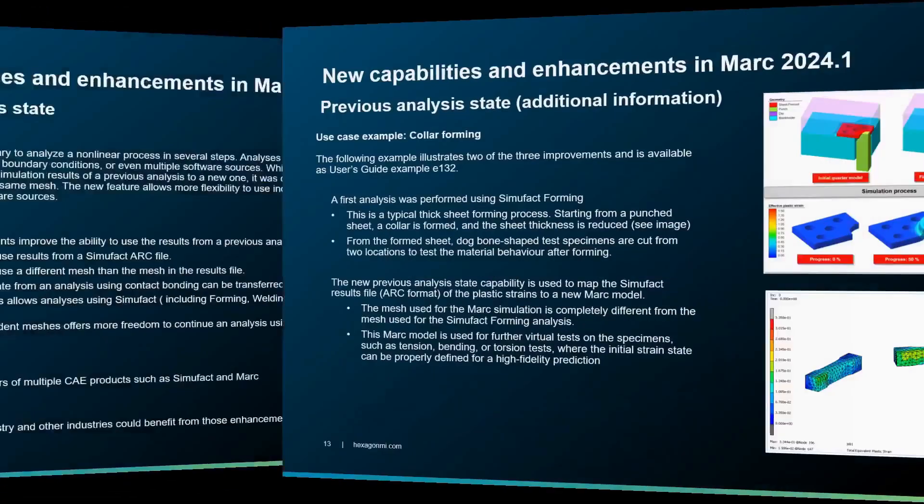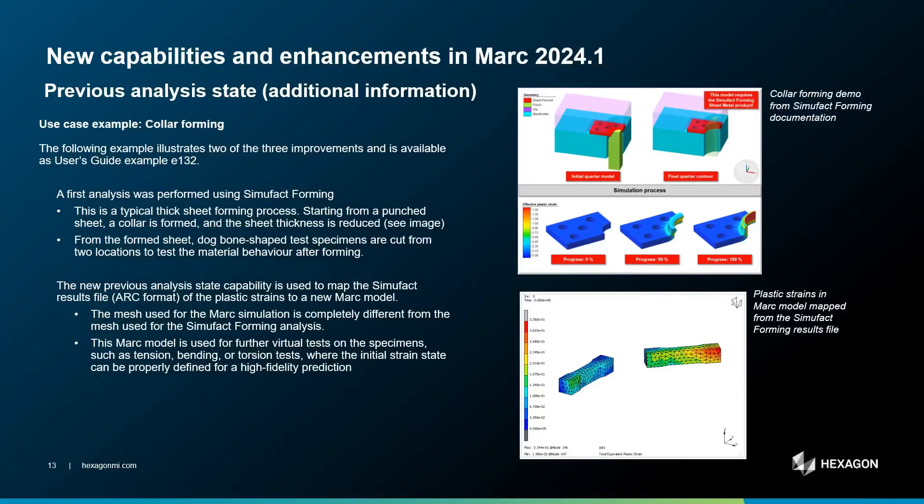Let's look at one example. This is a cold forming process. First of all, we use a Simufact product, Simufact Forming, to simulate the forming process. And then we will reuse those results in MARC to be able to continue the analysis. We will simulate a cutting effort to be able to extract dog-bone shaped test specimens, in order afterward to do some specific tension, bending, and torsion tests — virtual tests on those specimens.